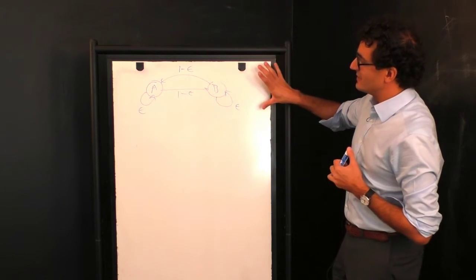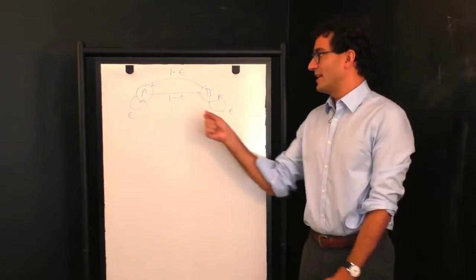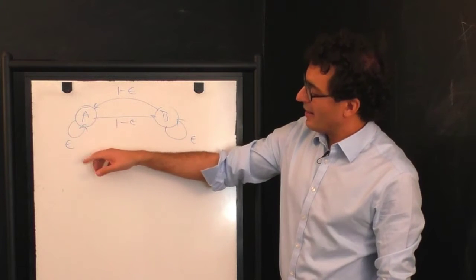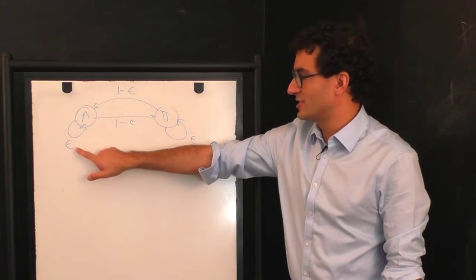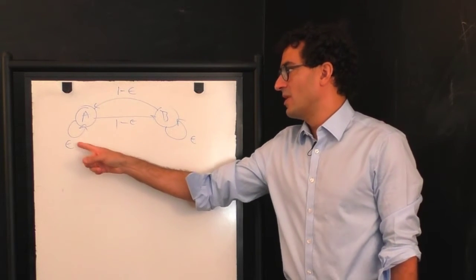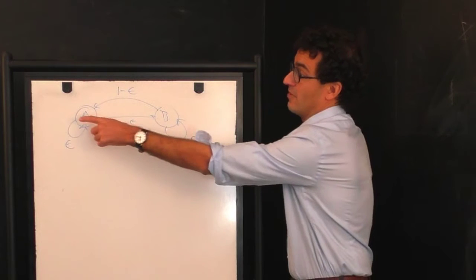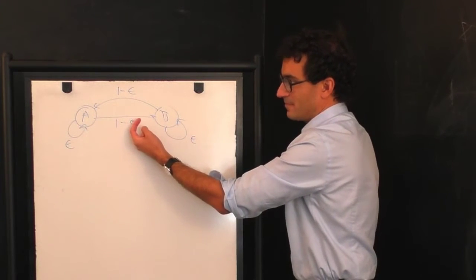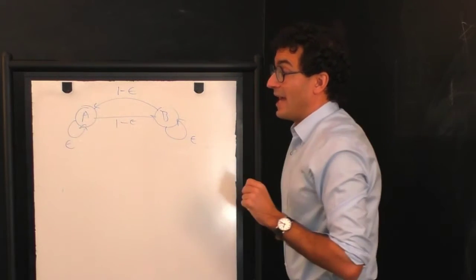I'm going to give you that example using a much simpler Markov chain, which I've drawn on the board here. This Markov chain has two states, A and B. Instead of writing exact numerical probabilities for each transition, I've parametrized the system with one parameter, epsilon. In this case, the system can jump from A to B with probability 1 minus epsilon, or stay in state A with probability epsilon.